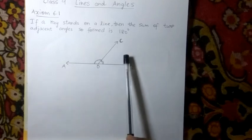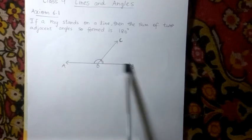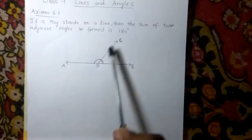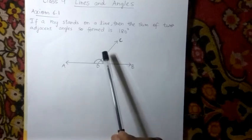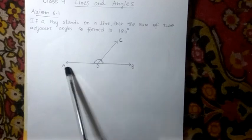There are two adjacent angles formed here, namely angle AOC and angle BOC. They are adjacent since OC is the common ray and AO and BO are the non-common rays for these two angles.